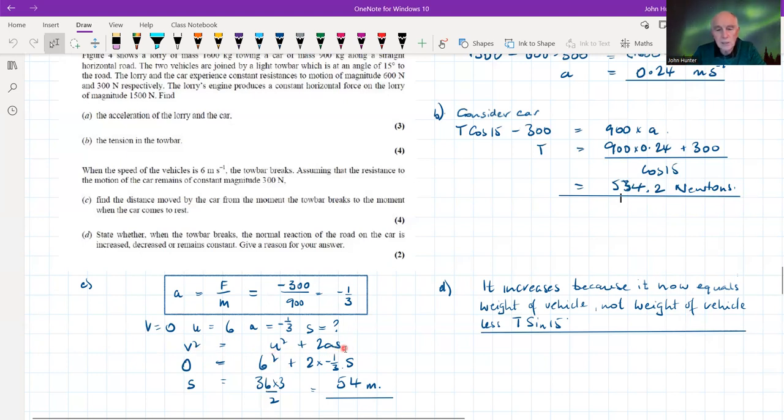We can substitute in what we know: v, u, and a. We've got an equation in s. We'll rearrange that and we're going to get s is 54 meters. That is the distance moved by the car from when the tow bar breaks.